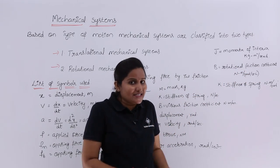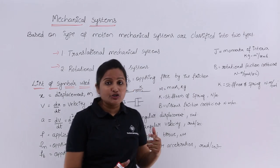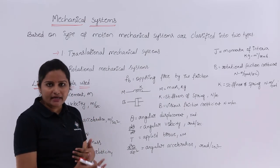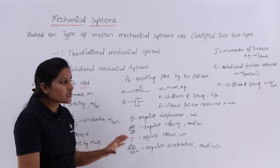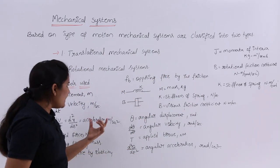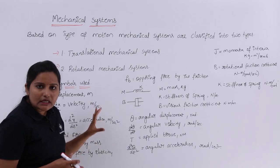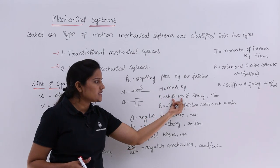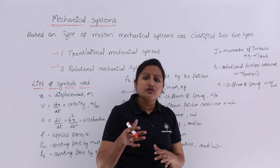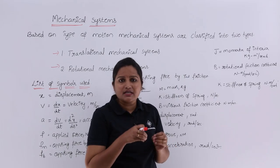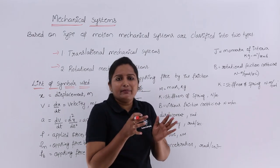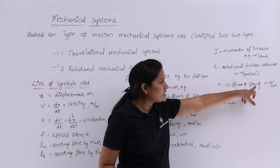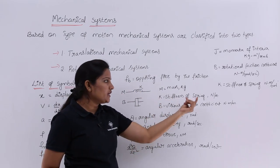In the next two classes, I am going to discuss translational mechanical systems as well as rotational mechanical systems separately. When considering systems, I will use J, B, K, and M. Whenever you see these symbols, keep their meanings in mind. K is nothing but stiffness of spring — whenever you need to use stiffness of spring, consider the coefficient K. In rotational systems, K is also equivalent to stiffness of spring.